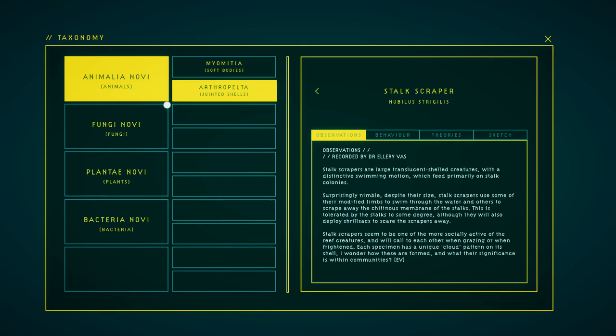Stalk scrapers are large translucent-shelled critters with a distinctive swimming motion, which feed primarily on stalk colonies. Surprisingly nimble despite their size, stalk scrapers use some of their modified limbs to swim through the water in order to scrape away the outer membrane of the stalks. This is tolerated by the stalks to some degree, although they will release frill sacks to scare the scrapers away. Stalk scrapers seem to be one of the more socially active of the reef creatures, and call to each other when grazing or when frightened. Each specimen has a unique colored pattern on its shell. I do not know how these are formed and what their significance is within communities.